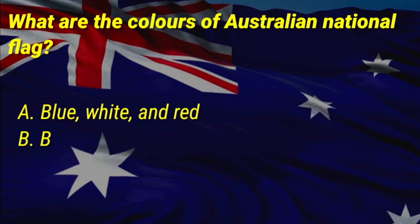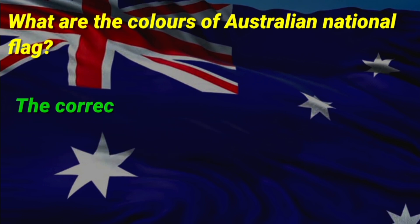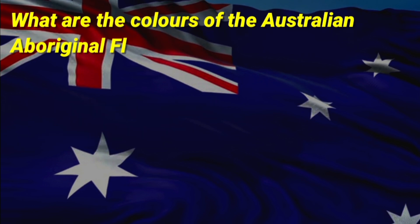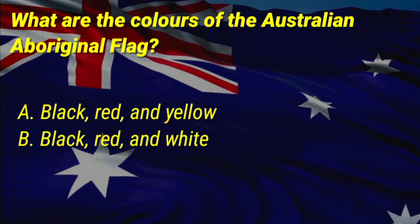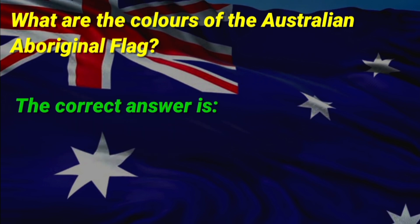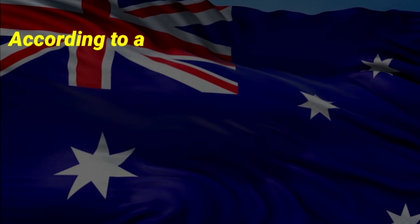What are the colors of the Australian national flag? A: blue, white and red, B: blue, white and yellow, C: blue, white and green. The correct answer is A, blue, white and red. What are the colors of the Australian Aboriginal flag? The correct answer is A, black, red and yellow.